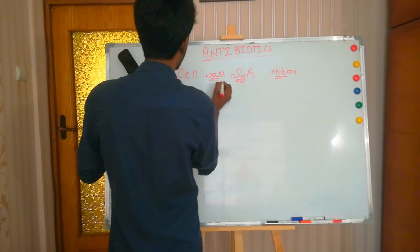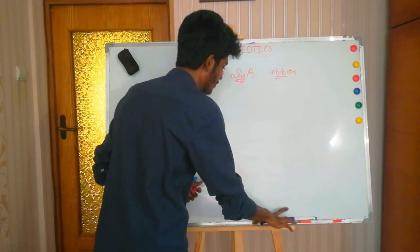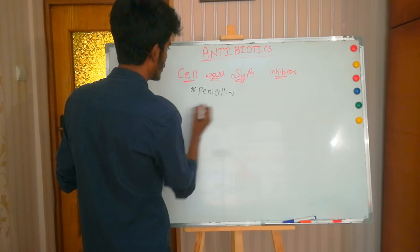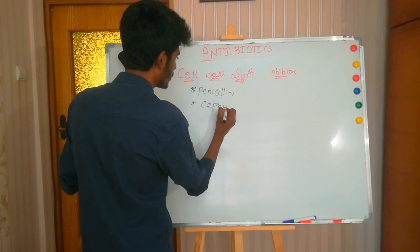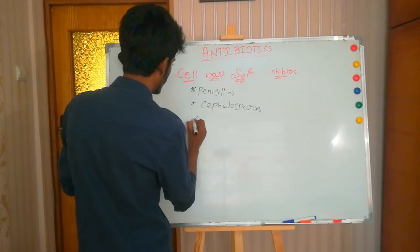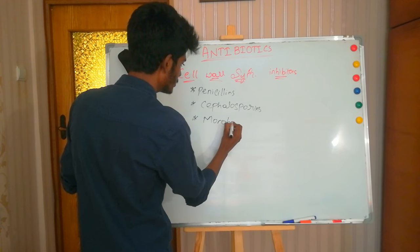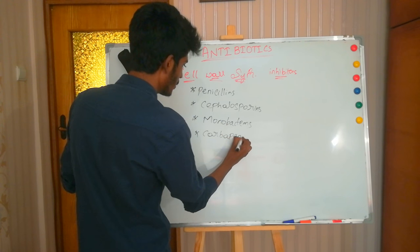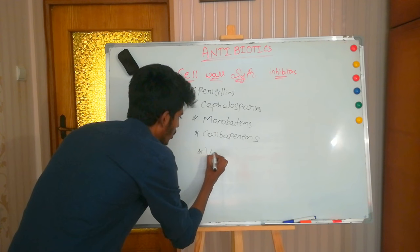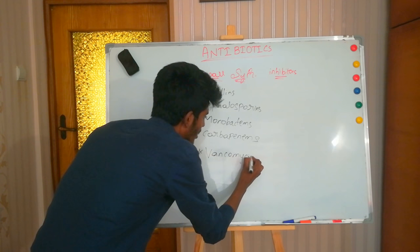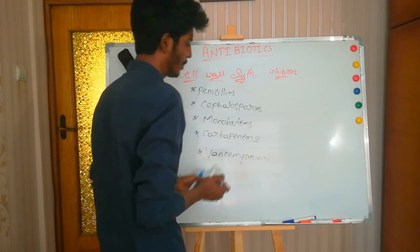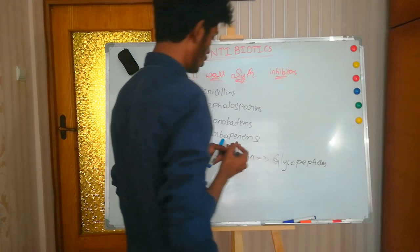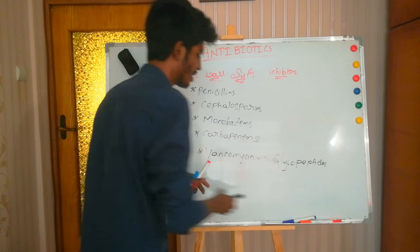Cell wall synthesis inhibitors include several groups of antibiotics: penicillins, cephalosporins, monobactams, carbapenems, and vancomycin. Vancomycin belongs to a further group called glycopeptides. These are the antibiotics which fall under the category of cell wall synthesis inhibitors.